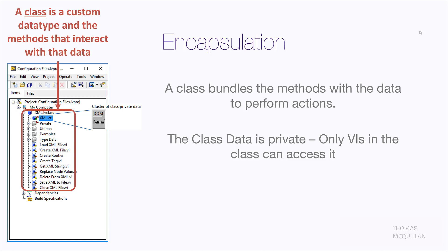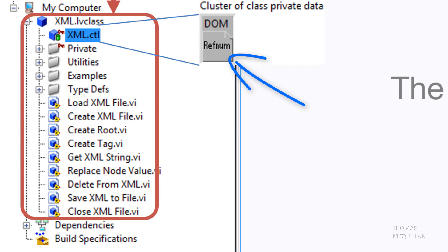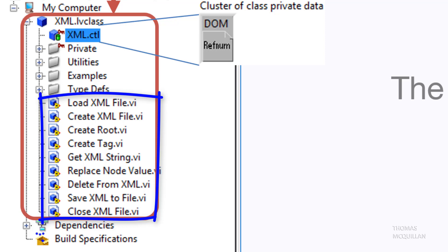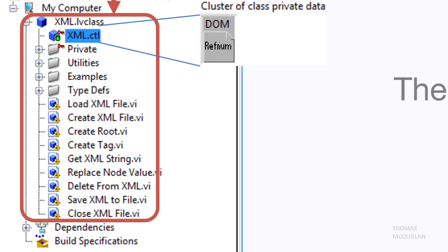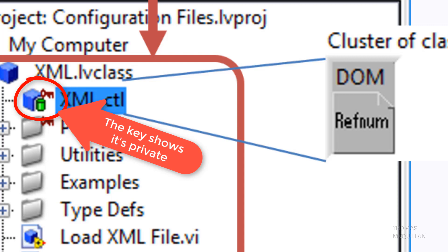The first pillar of OOP I want to share with you is encapsulation. A class is a custom data type and the methods that interact with that data — so a class bundles the methods and the data together. Looking at the screenshot here, the custom data type is a DOM, or Document Object Model, and that's the type of reference used to interact with XML files. Some of the methods that use that reference are: load XML file, create XML file, create root tag, delete tag, and save and close file. The important thing to stress here is that class data is private, which means only the VIs in the class can access it.